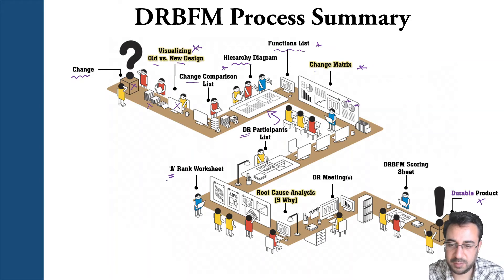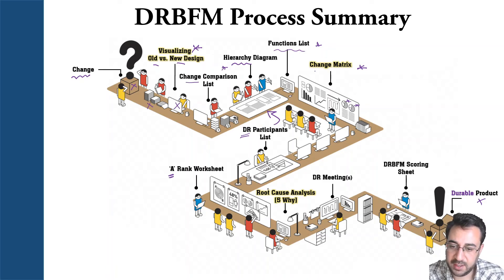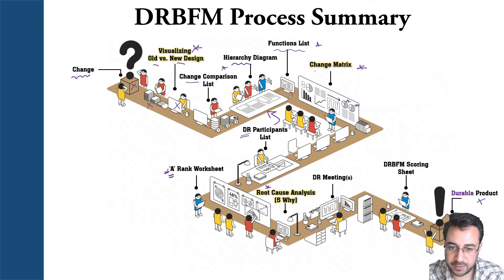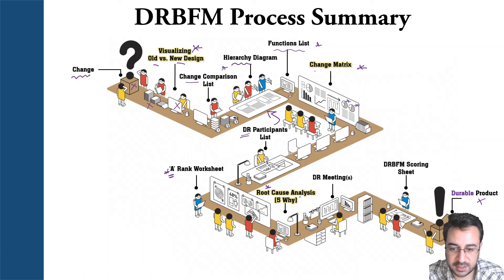You start to implement root cause analysis for each concern and the processes to overcome that concern, being able to deliver a durable product. After the A-rank sheet — which can be a dedicated tab or combined with the A-rank — you list all confirmed concerns out of the change matrix. The third important step in DRBFM is the root cause analysis, known in the DRBFM community as the five whys analysis.